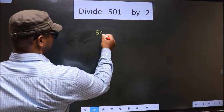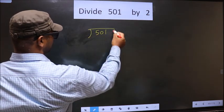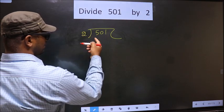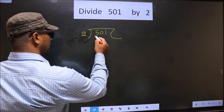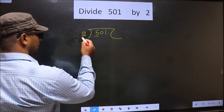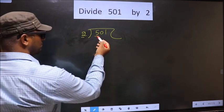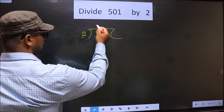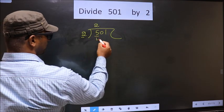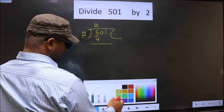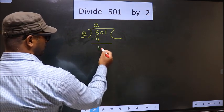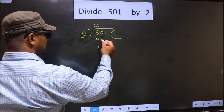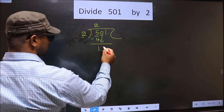That is 501, 2 here. Okay, next. Now here we have 5. Here 2. A number close to 5 in 2 table is 2 2s, 4. Now you subtract 5 minus 4, 1. Now you bring down the beside number. That is 0 down.